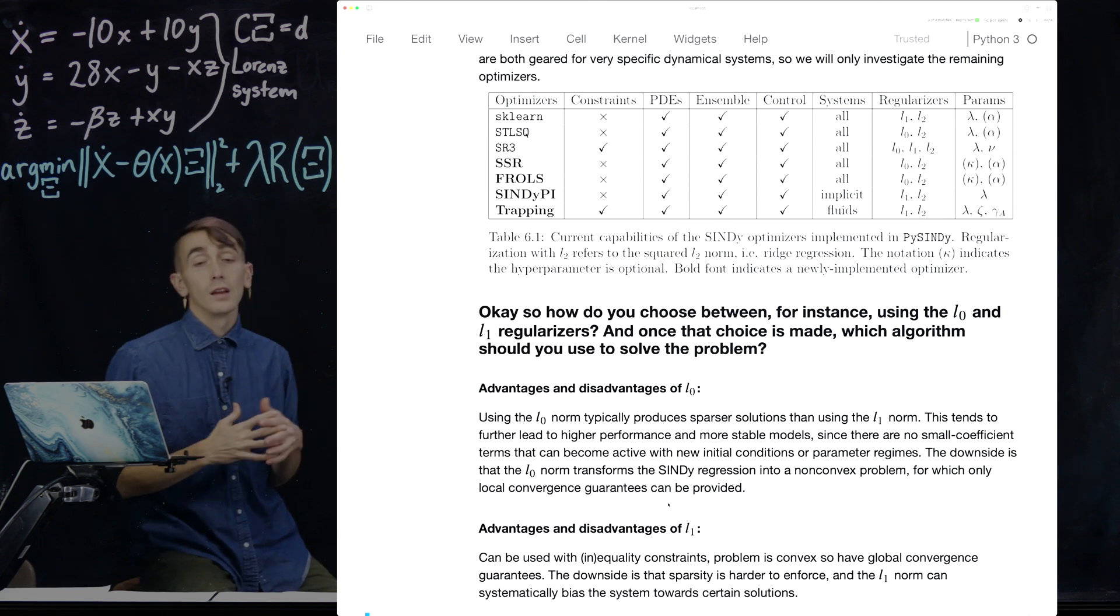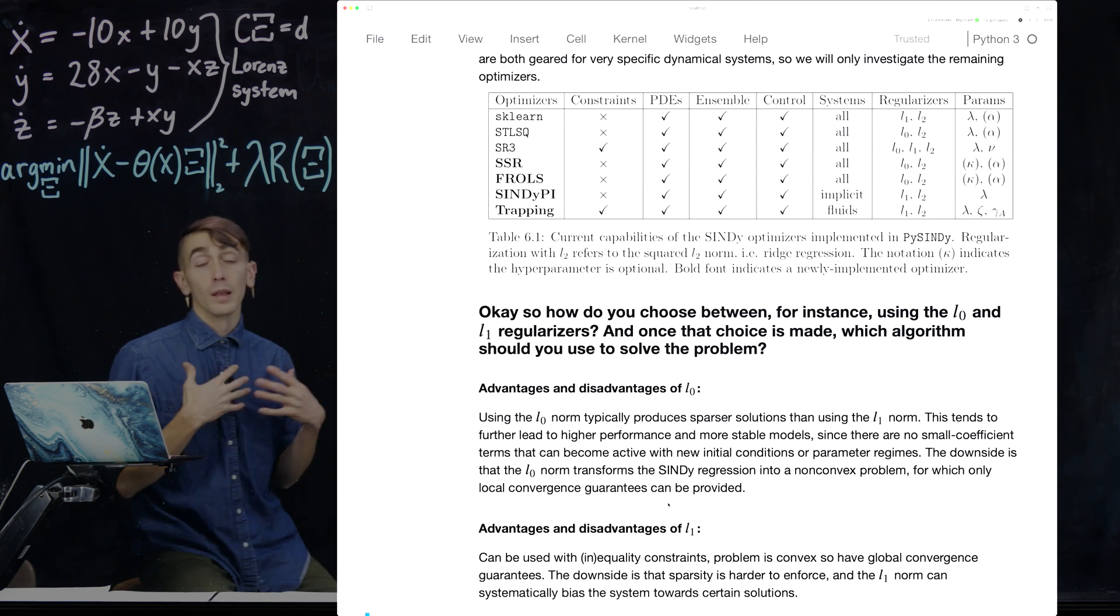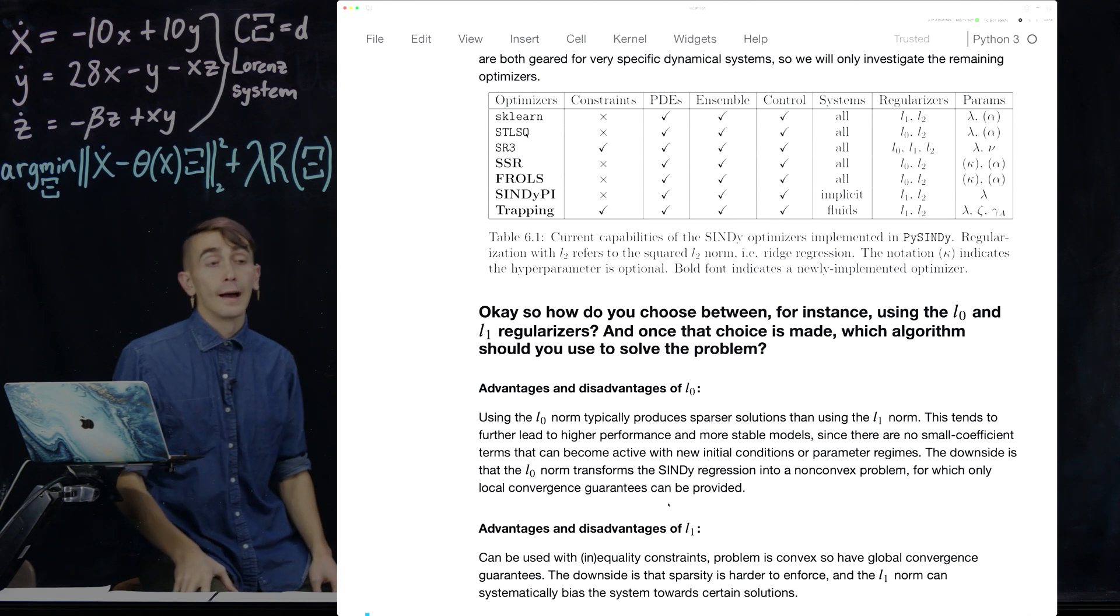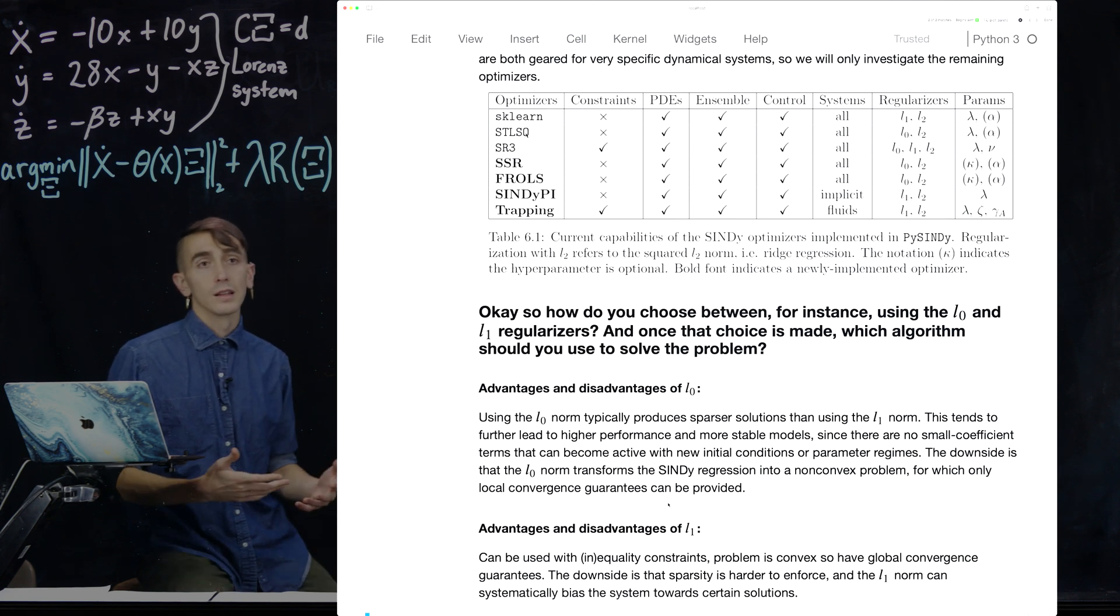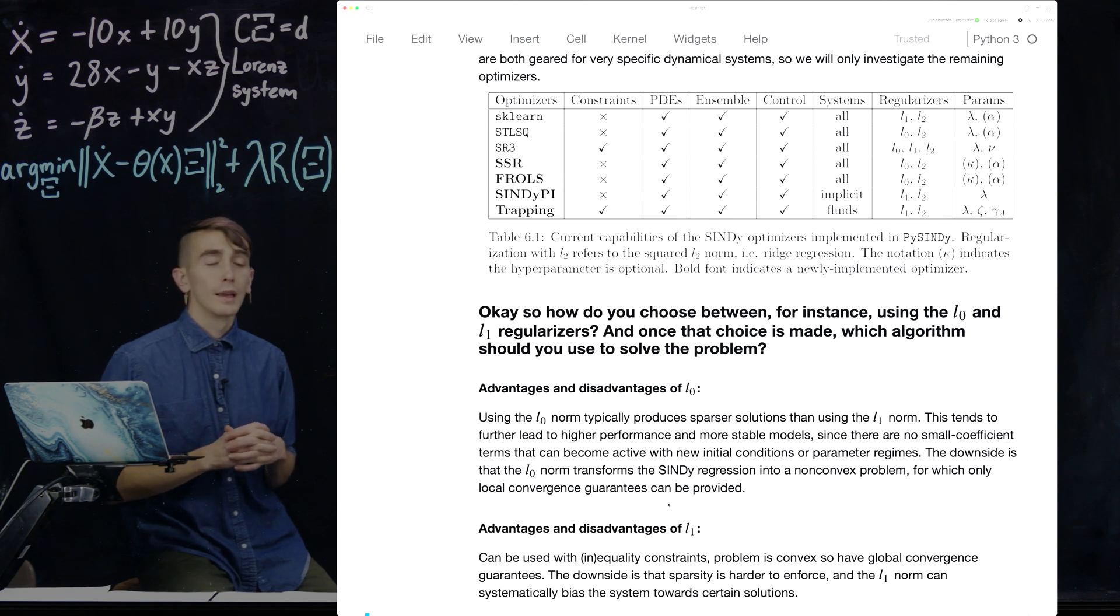L1 is sort of the flip side. So one great thing is the L1 norm can be used with equality and inequality constraints. And this is because the problem is actually convex if you use the L1 norm here. And this also means it has global convergence guarantees. So this having a convex optimization is really helpful. The downside is that the sparsity is harder to enforce, and the L1 can systematically bias the system towards certain solutions in certain regimes.